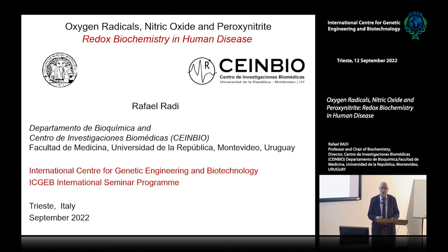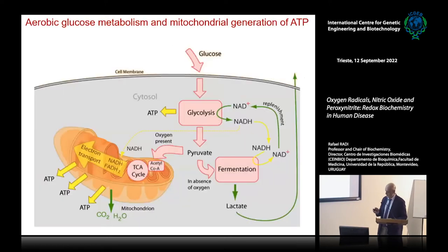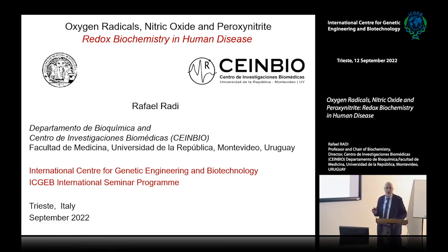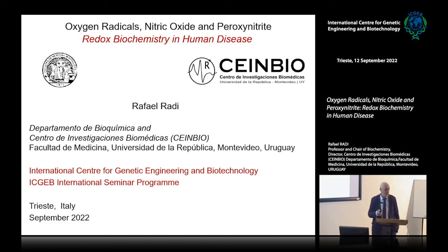Lawrence was talking about something we like to say: the good, the bad, and the ugly — with the good being nitric oxide, the bad being oxygen radicals, and the ugly being peroxynitrite. This doesn't need to be like that all the time, but it's a good way to put it in perspective. Redox biochemistry in human disease.